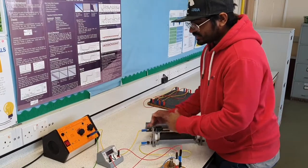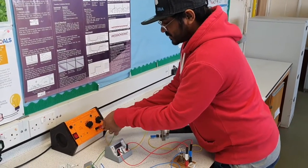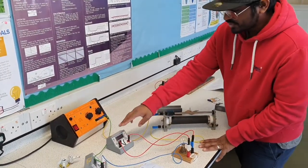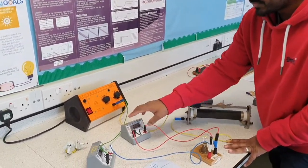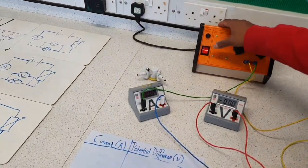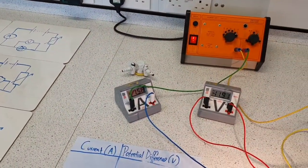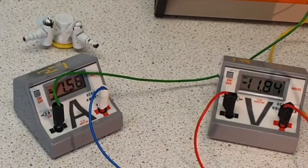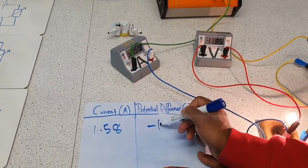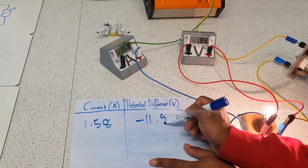Now what we're going to do is reverse the current by switching the wires around. To show that we've got current going in the reverse direction, you can see the voltmeter and ammeter reading negative values. So in this case, I have negative 1.58 and minus 11.89.